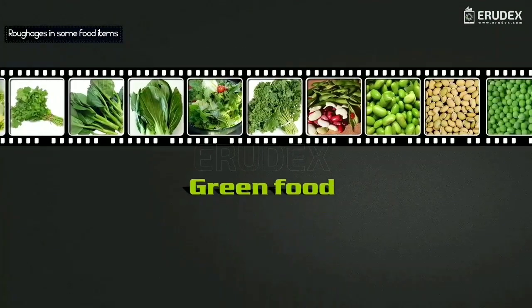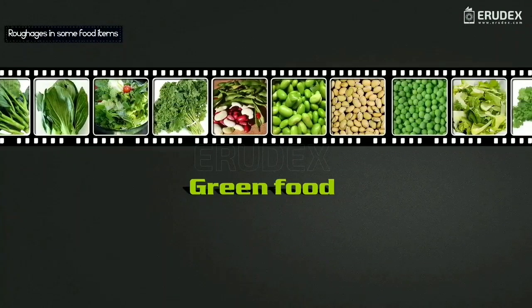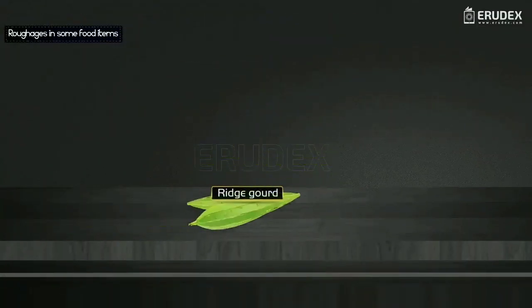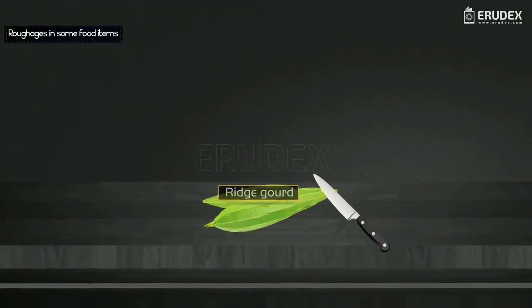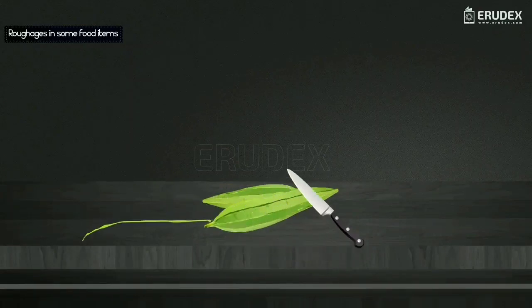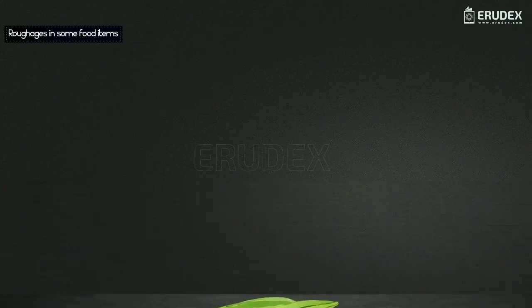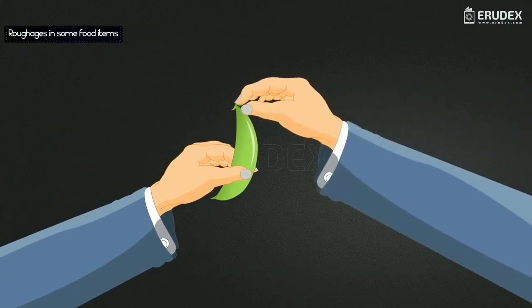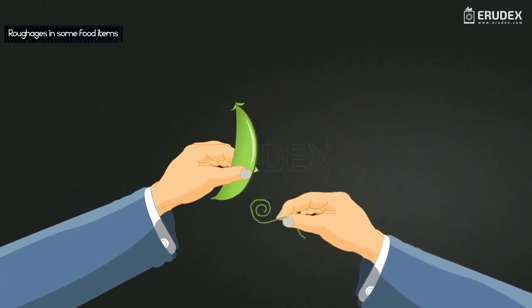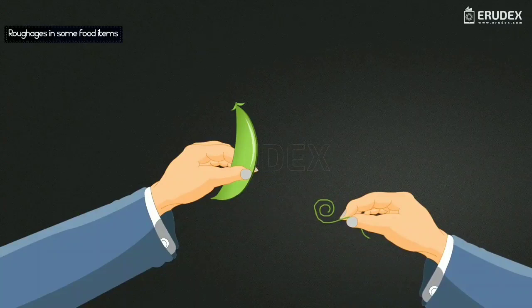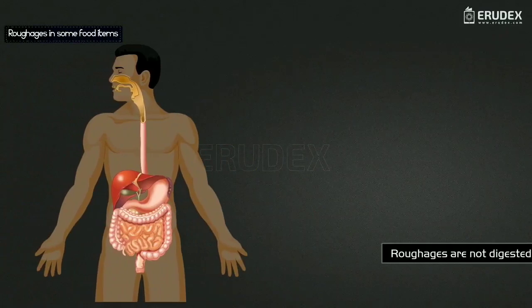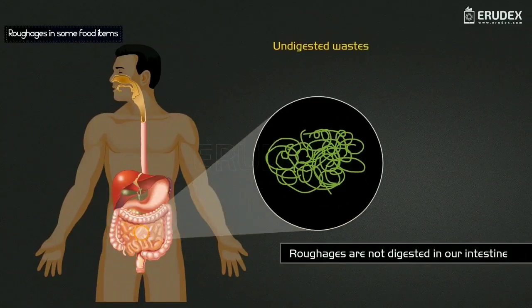Children, have you ever observed green food items? Take a ridge gourd and peel it with a knife — you get long, thread-like strands called fibers. Similarly, take beans or pea pods, hold at the tip and pull out, and you get a thin thread-like structure called fiber. These roughages are not digested in our intestine and remain as undigested waste.